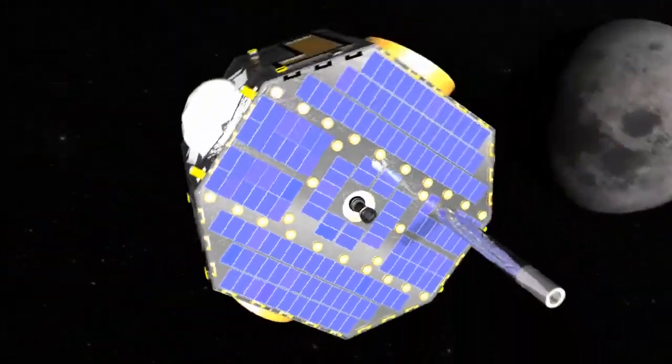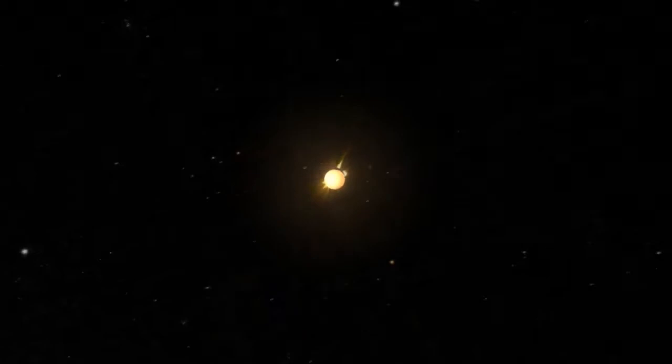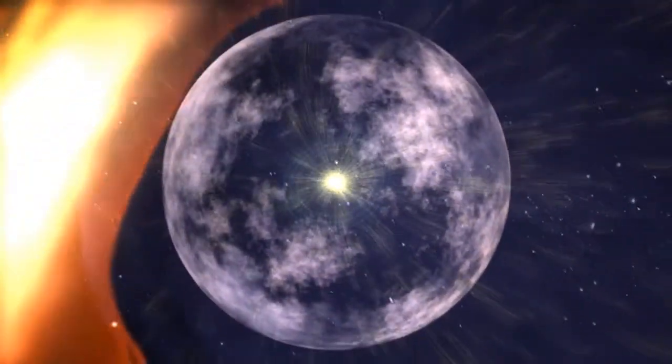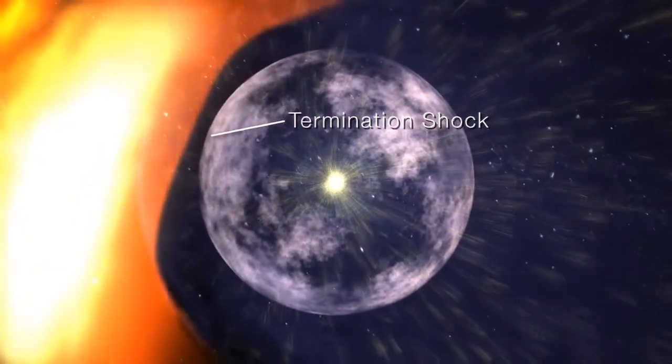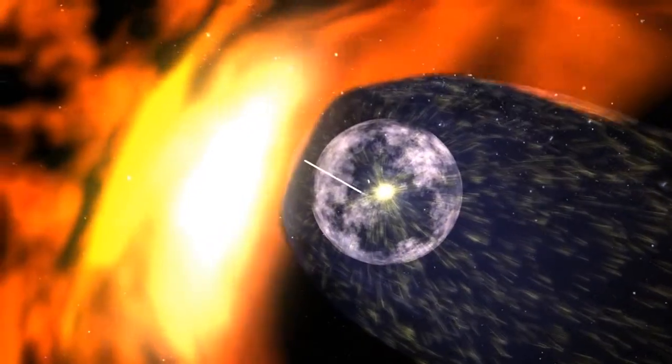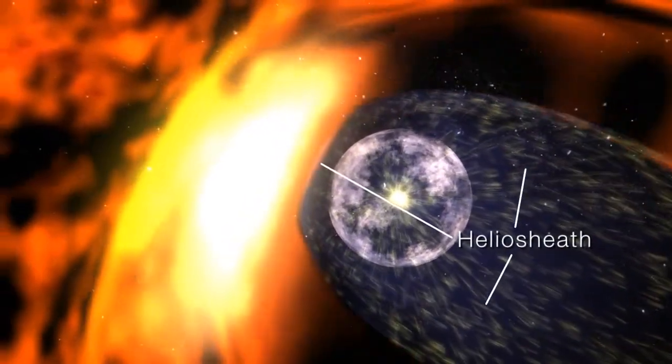IBEX looks at the very edge of the sun's reach, starting at about 8 billion miles away. The region begins with the termination shock and ends with the heliopause. Between those two is the heliosheath, a teardrop-shaped region sculpted by the pressure of the interstellar medium.